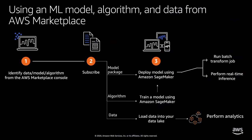Trying out these products is easy. Many machine learning models have a try product demo feature that lets you try before you buy. To use an ML model, algorithm, or a data product, you need to subscribe to the product from the AWS Marketplace console. And then if it's a model package, you can directly deploy it with Amazon SageMaker and perform inference via a batch transform job or via an endpoint.